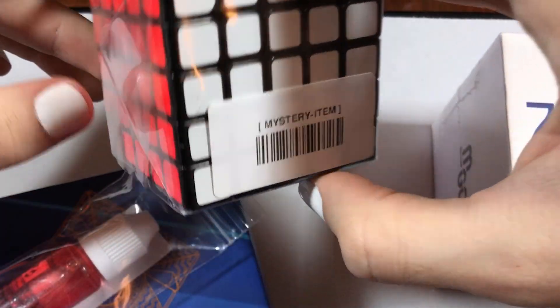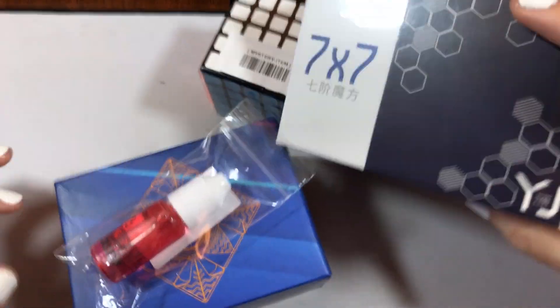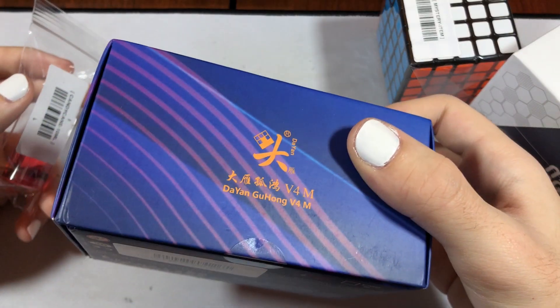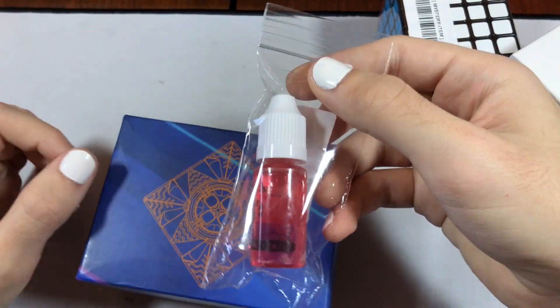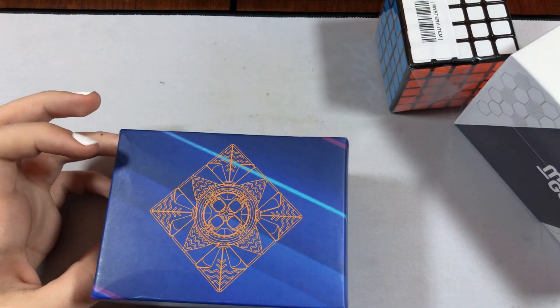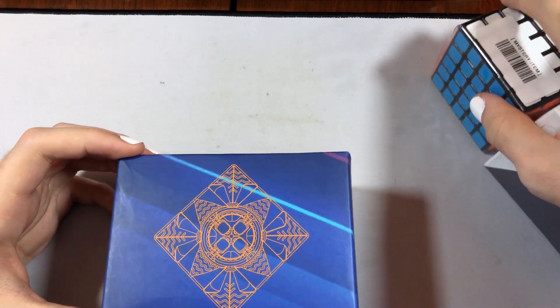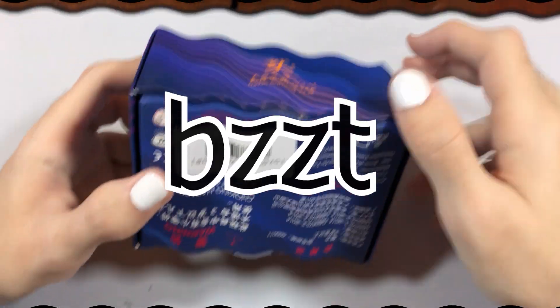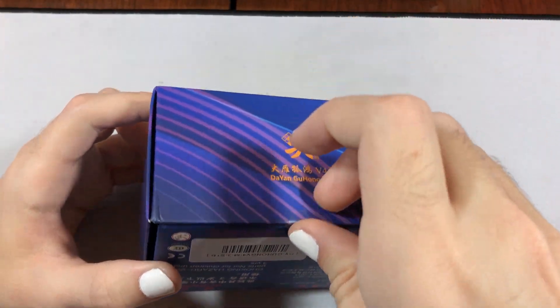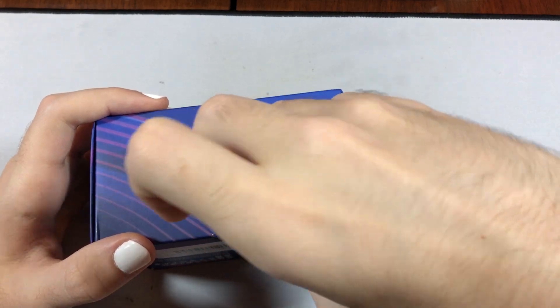For this one, I've got this random 5x5, and also we got the MGC 7x7, and the main event, the Dayan Guhong V4, and also some juice. Let's get into all that stuff later because I'm really excited for this Guhong V4. So I'm really hyped for this.